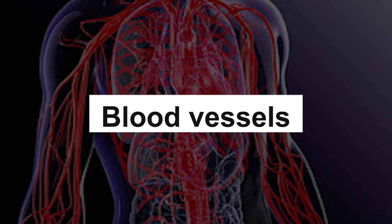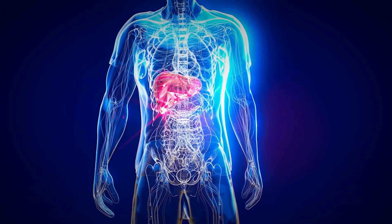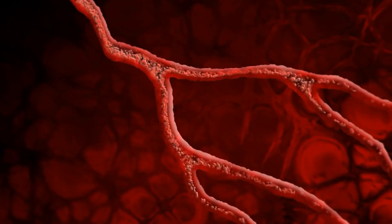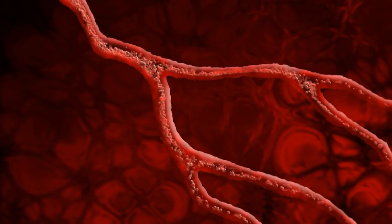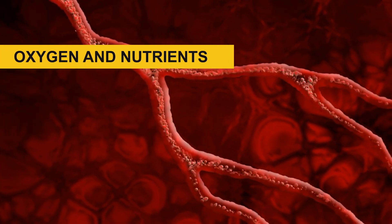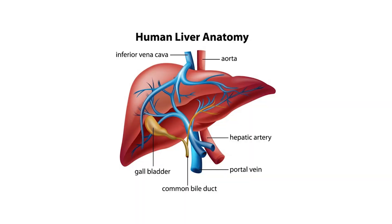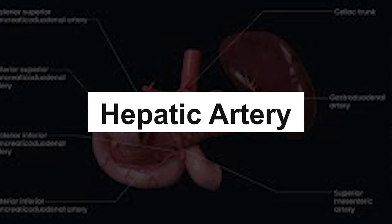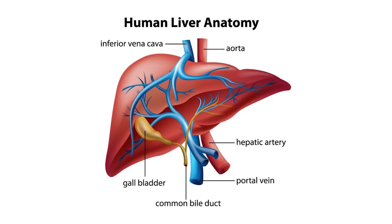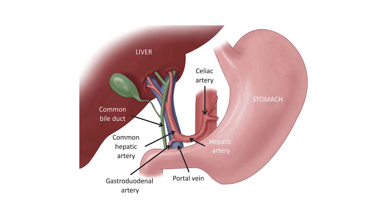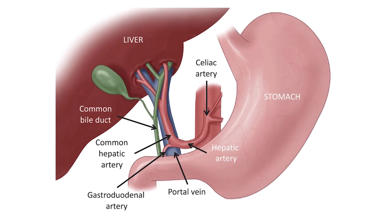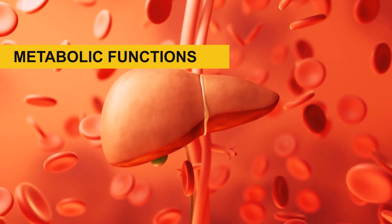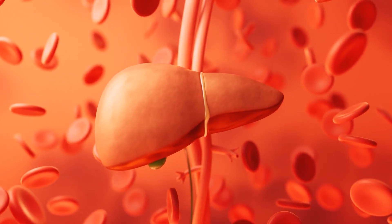Blood vessels. The liver is a highly vascular organ, meaning it has an extensive network of blood vessels that play a crucial role in its functions. These blood vessels serve various functions in the liver, including the supply of oxygen and nutrients, as well as the removal of waste products. Hepatic artery. The hepatic artery is responsible for supplying oxygen-rich blood to the liver. It typically branches off from the celiac artery, which is a major branch of the abdominal aorta. This oxygenated blood is essential for the metabolic functions of the liver, particularly the hepatocytes, or liver cells.